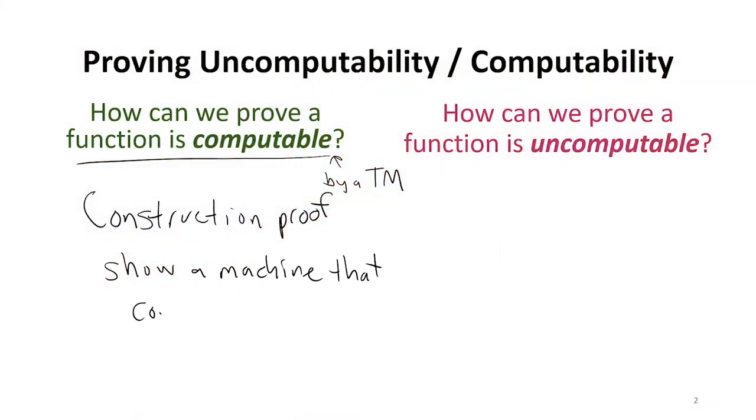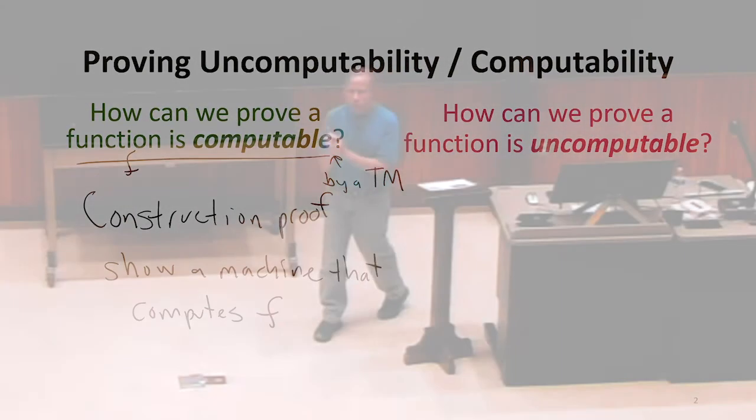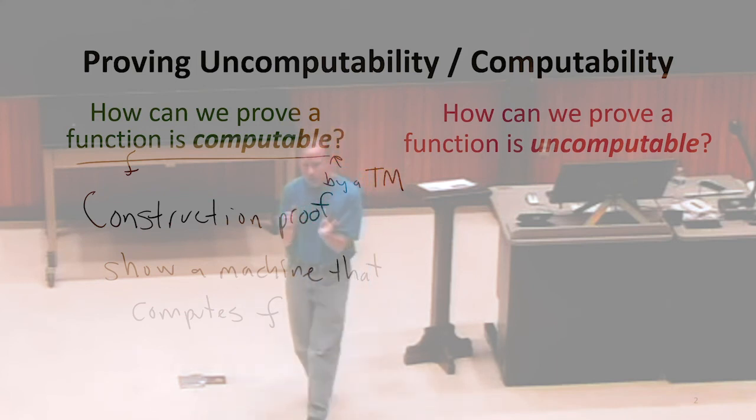But what you have to do is construct some machine that computes, let's say, a function f. And what does it mean to have a machine that computes it? It has to, for all possible inputs, produce the correct answer. And that means it always finishes and it always produces the right answer.